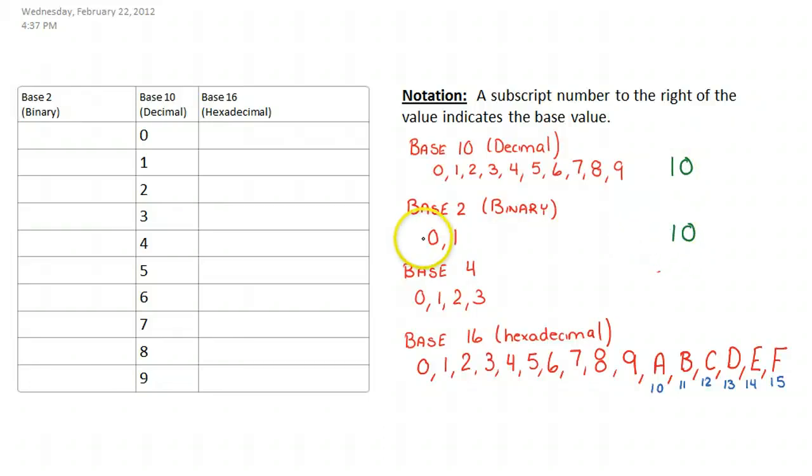But what happens if this is base 2? Because it very well could be since it's made up of only 1s and 0s. Well, to indicate the base that a number is, we do a little subscript at the very end. And this represents the base. So this represents the base that we're working in. So that means 10 with subscript 2 is in base 2.